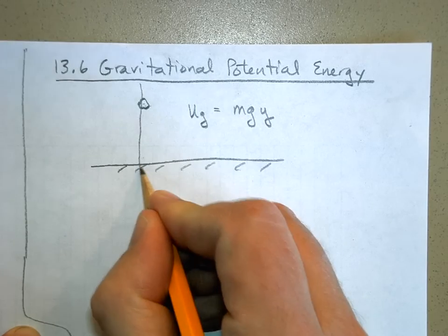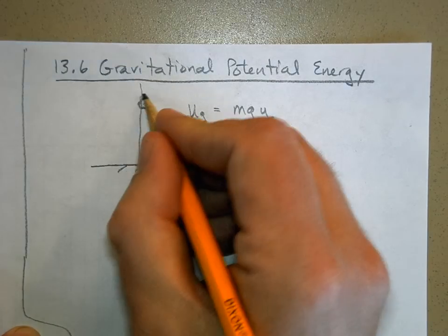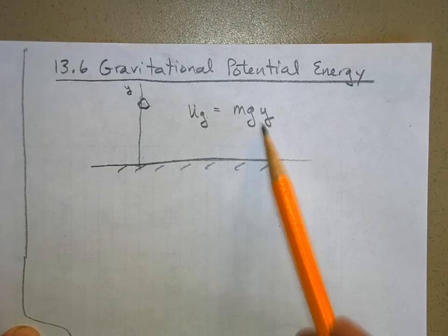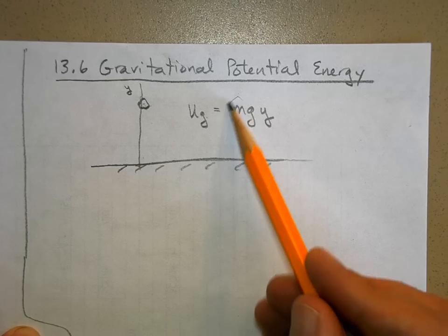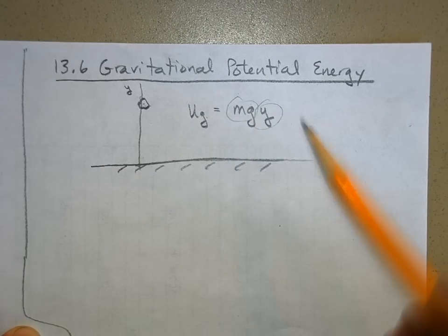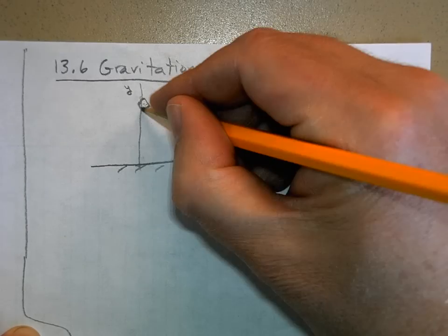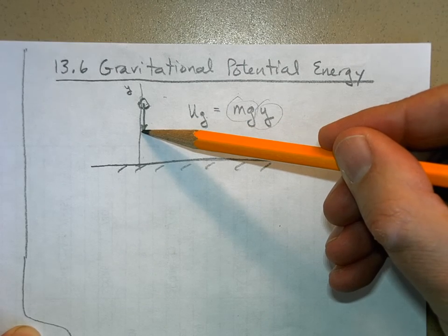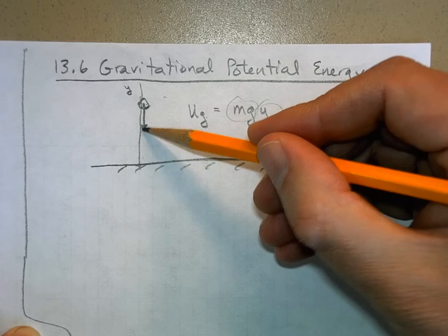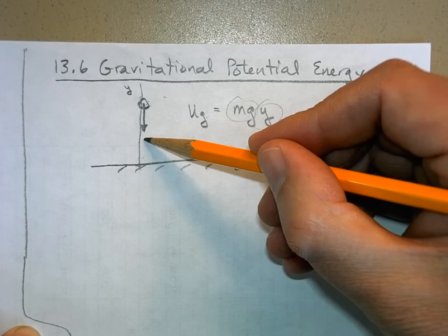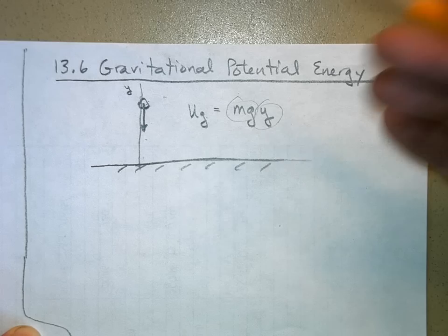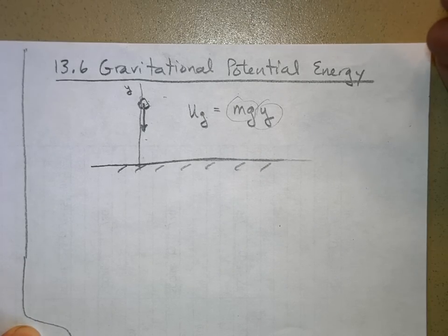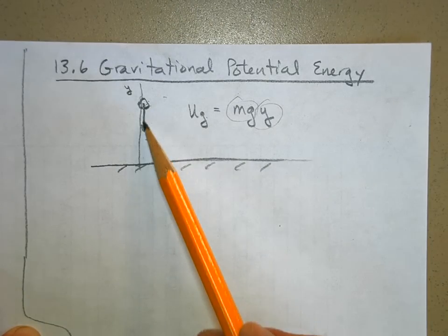If we make the ground the origin and set up our y-axis, then y is the height above the origin and mgy is how much potential energy the object has. Here mg is the force and y is tied to the work done. If the force of gravity pulls the object down, it does positive work because the displacement is downward — force and displacement are in the same direction.